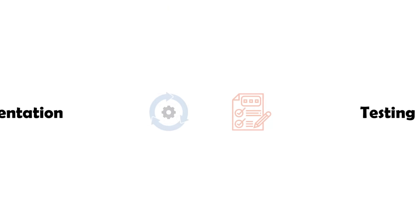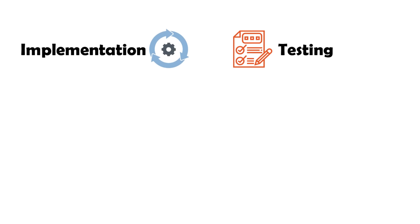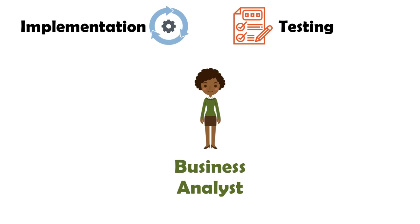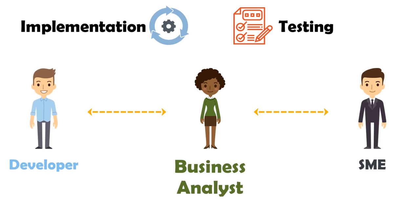The sixth task of a business analyst is to act as a central point of knowledge. The business analyst mainly performs this task during the implementation and testing phases, communicating with developers and SMEs to answer any queries that arise during implementation and testing of an automated solution.